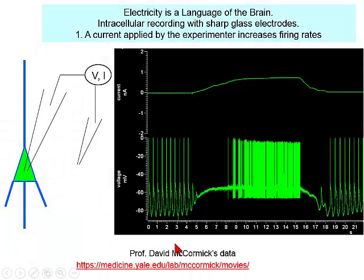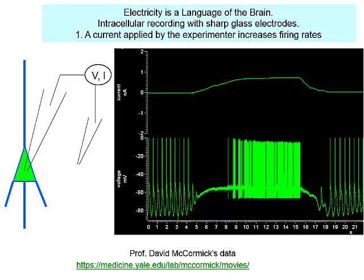The first point to make is that electricity is a language of the brain, so we need to understand electricity. I'm going to show you a movie. This movie is taken from the brain of a rat. There is a sharp electrode inside that cell recording voltage. Most often these days in isolated preparations, we don't use sharp electrodes, but we use patch electrodes.